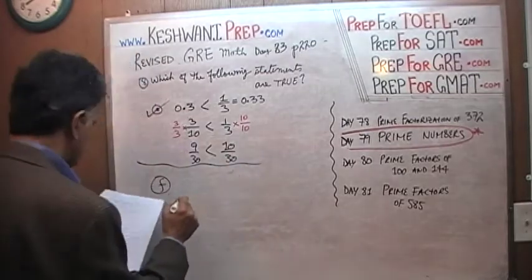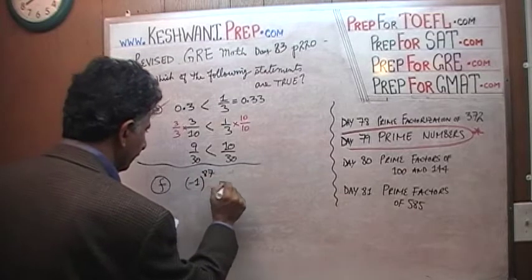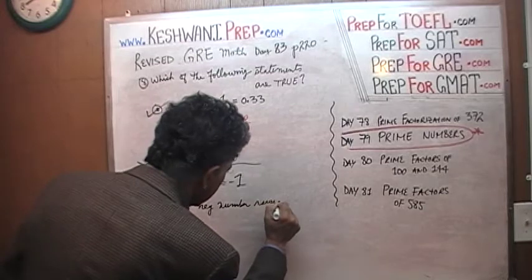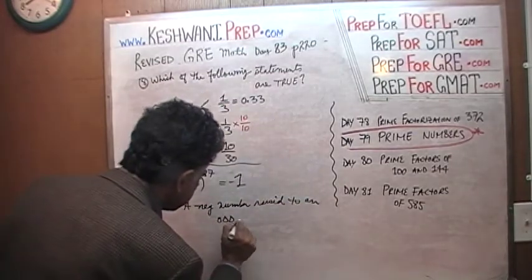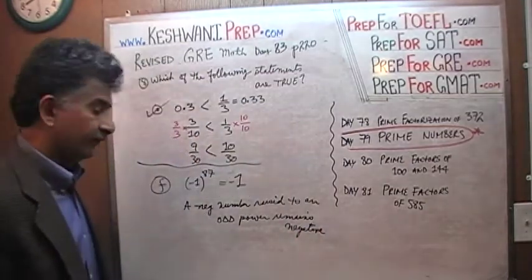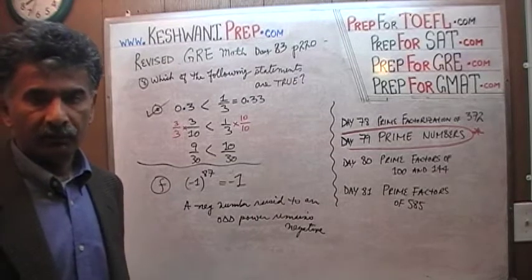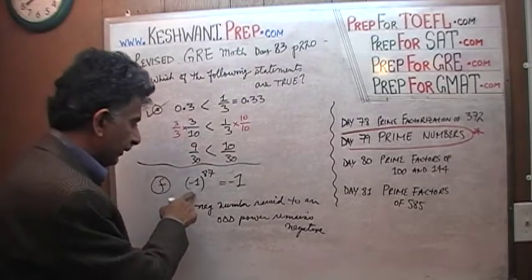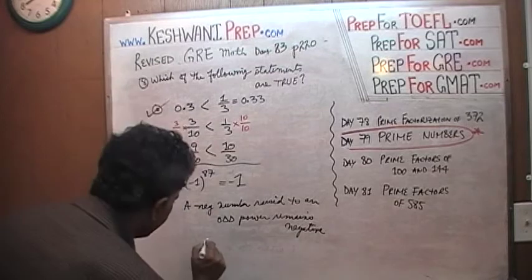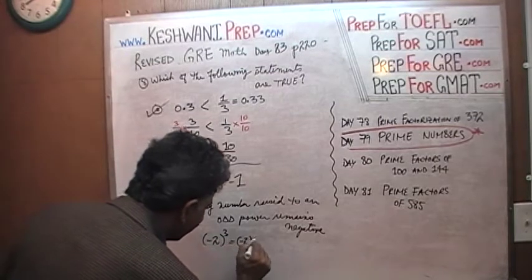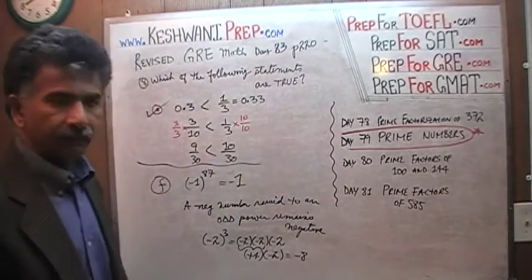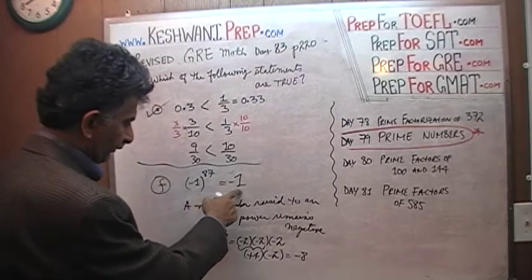Statement F says negative 1 raised to the 87th power equals negative 1. A negative number raised to an odd power remains negative. In this case we have 1, and no matter how many times we multiply 1 by itself it's just 1 — but it remains negative 1 because of the odd exponent. For example, negative 2 to the 3rd is negative 2 times negative 2 times negative 2: negative 2 times negative 2 is positive 4, and positive 4 times negative 2 gives negative 8. So negative 1 to the 87th equals negative 1. True.